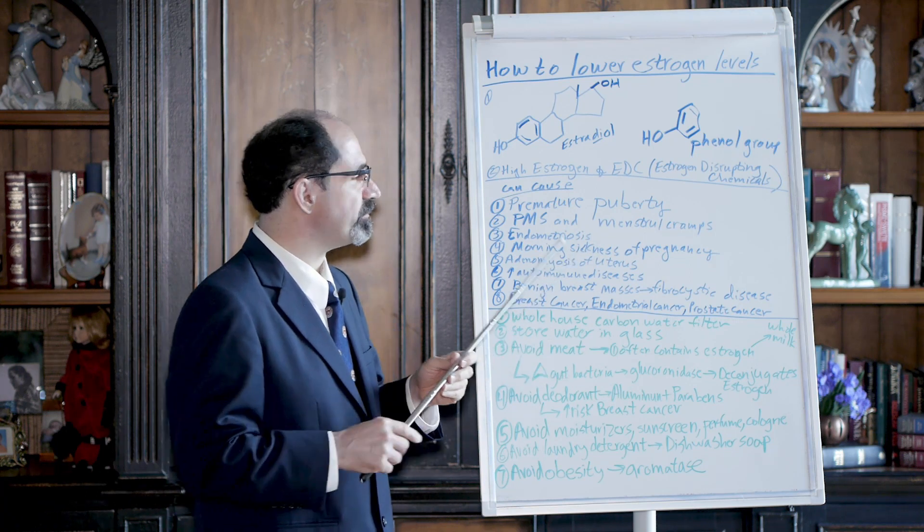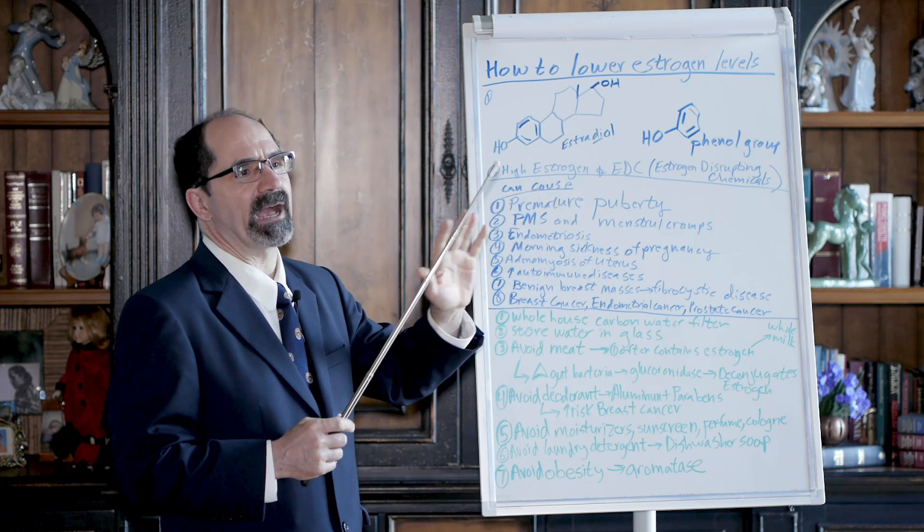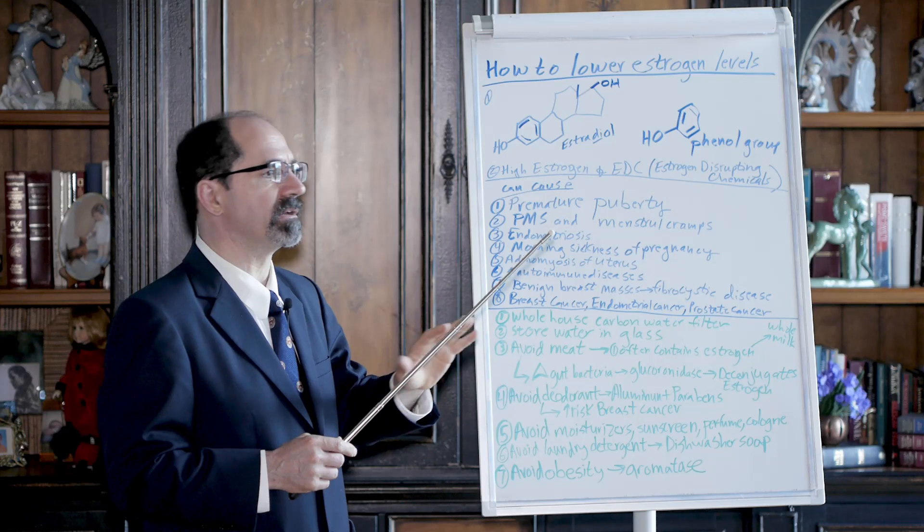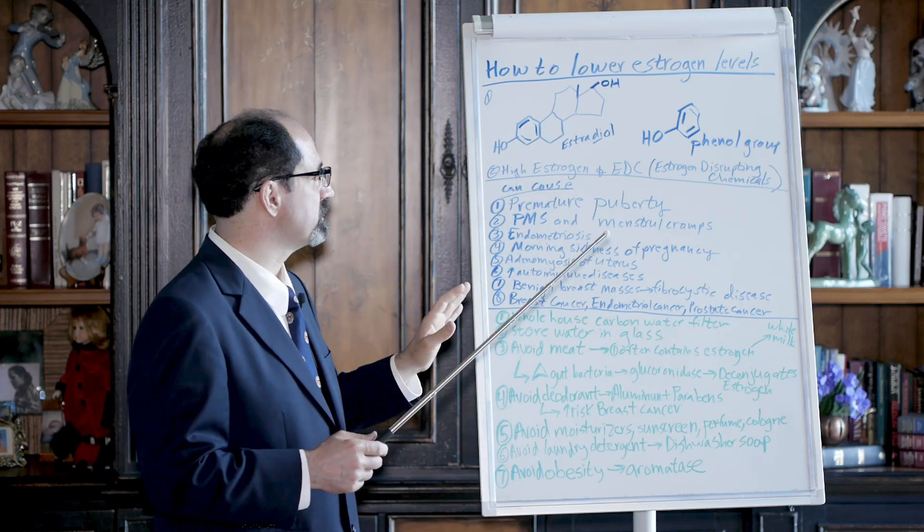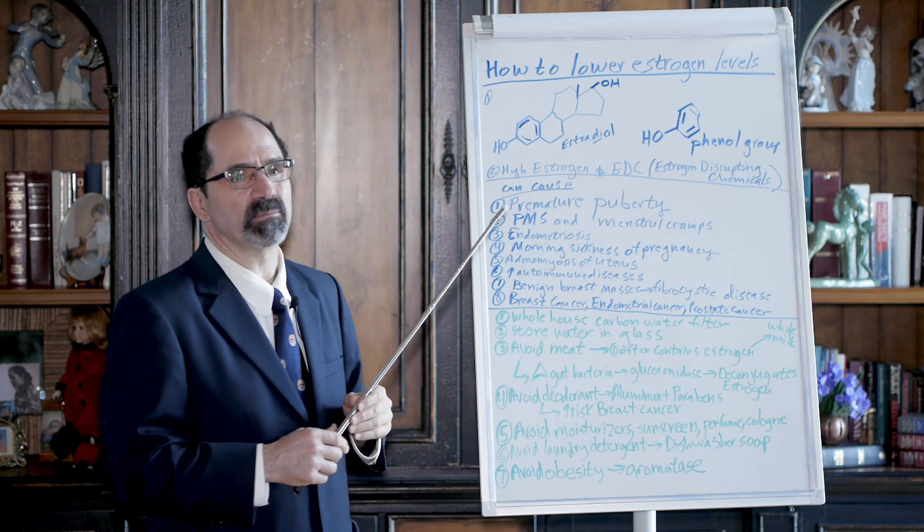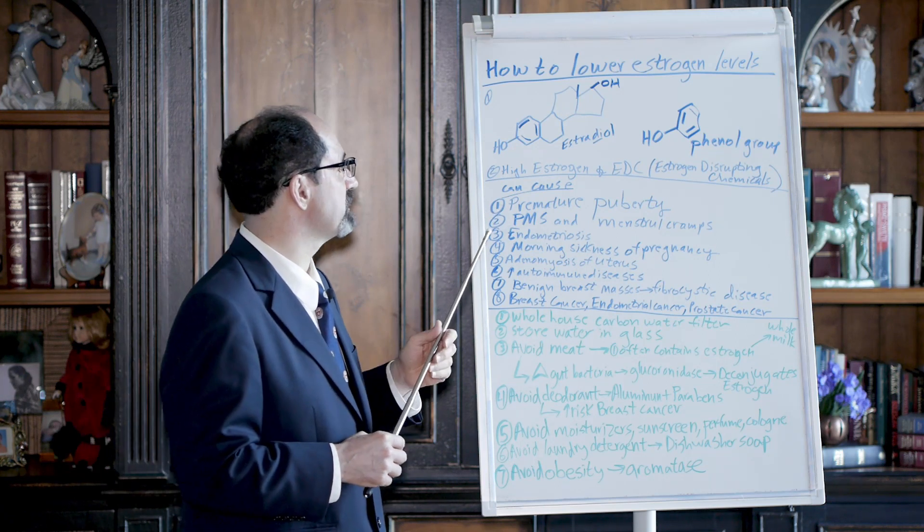Well, some type of paraben-like compound is routinely put into most moisturizers, sunscreens, and deodorants. And that's a big reason why it's good to be a minimalist and not be putting that stuff on yourself.